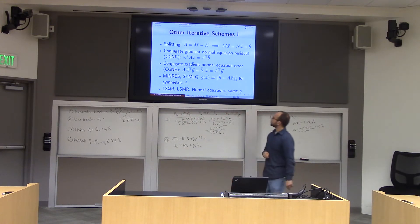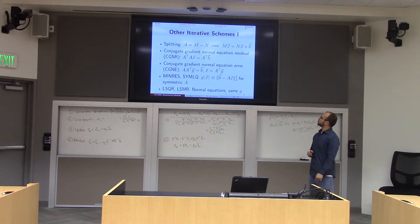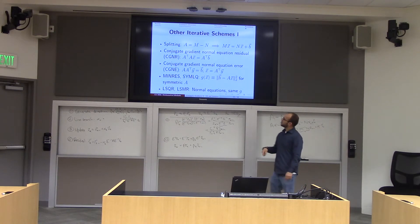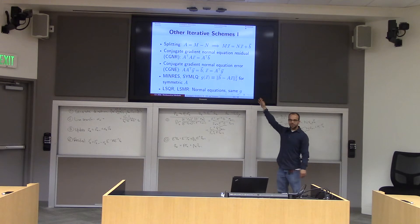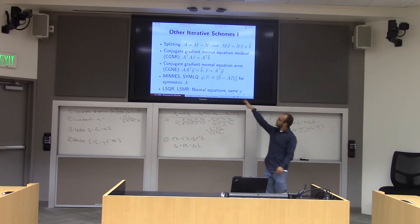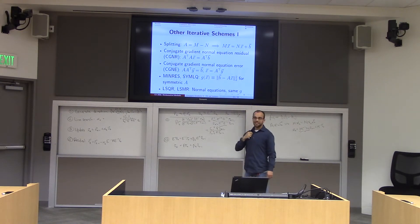There are two variations of this strategy. One's called conjugate gradient normal equation residual, which is what I just described. There's also conjugate gradient normal equation error. By the way, for some reason, people in this community like to give everything acronyms and they're very hard to keep straight. Conjugate gradient normal equation error does the same thing, but does A A transpose instead of A transpose A.